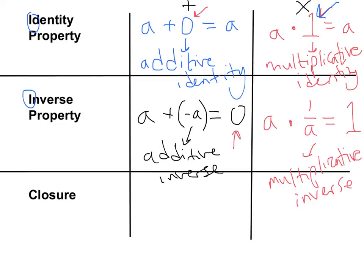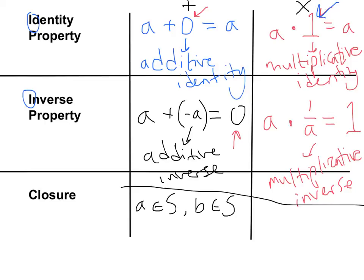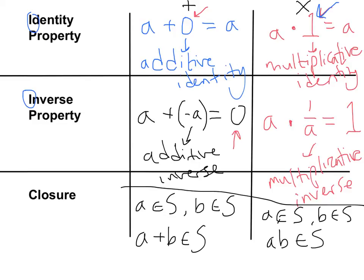Closure — we're going to write out the notation but discuss what it means in class. The closure property says that if a belongs to set S and b belongs to set S, then a plus b is also in S. Similarly for multiplication: if a belongs to S and b belongs to S, then a times b also belongs to S. Don't worry about the fancy notation for now — just get it down in your box.